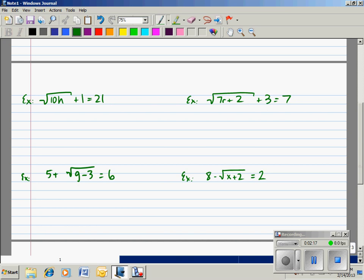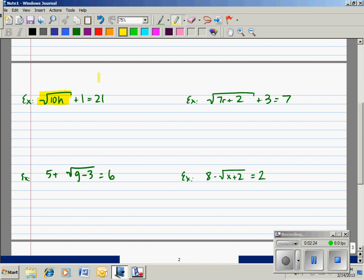Example number 1. The square root of 10h plus 1 is equal to 21. In order to get the radical all alone, and let me highlight the radical term. In order to get that term all alone, I want to get rid of the 1. So I will subtract 1 on both sides, and that equals 0. So now I have the square root of 10h is equal to 21 minus 1, which is 20.